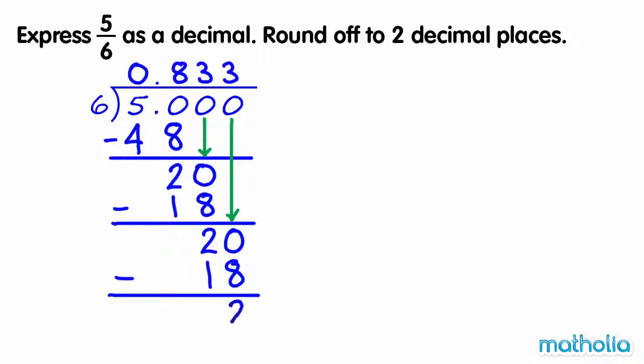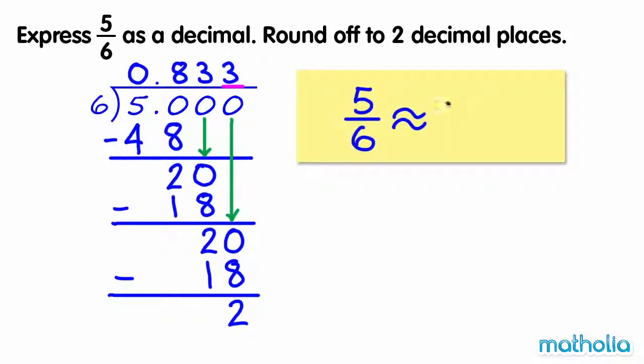The digit in the thousandths place is three. So we round down. Five sixths is approximately equal to zero point eight three.